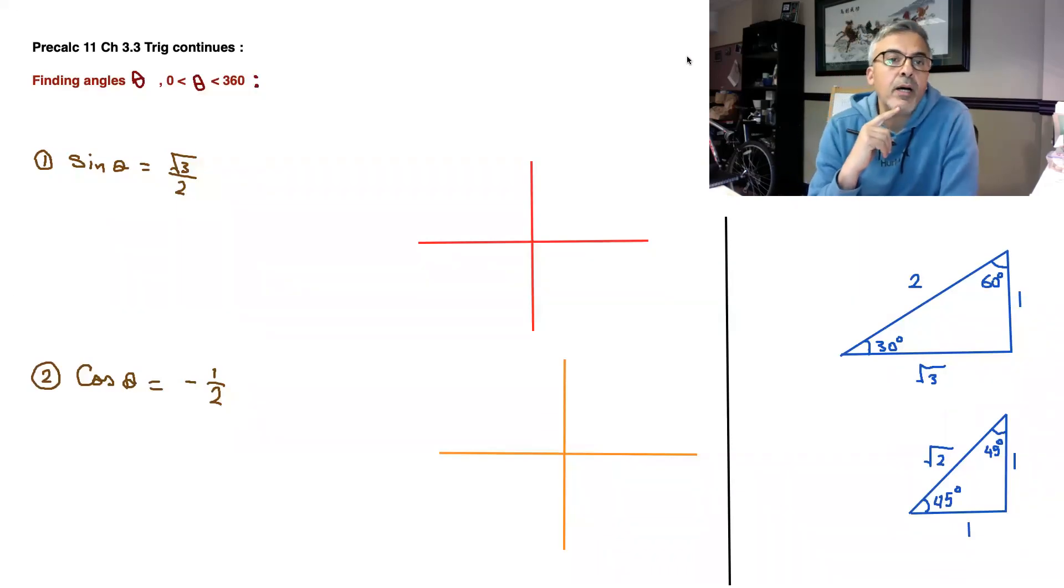Section 3.3 from trig and pre-calc 11, basically finding the angle theta between 0 and 360. So a few things to remember: